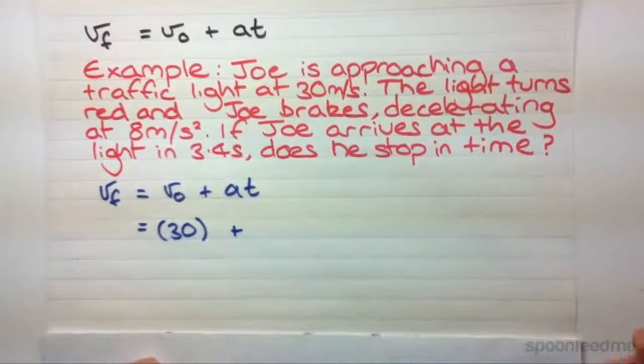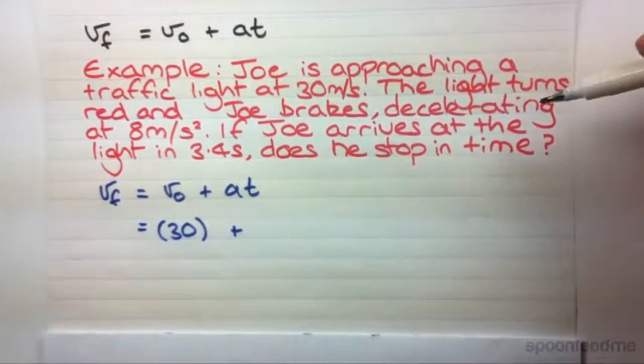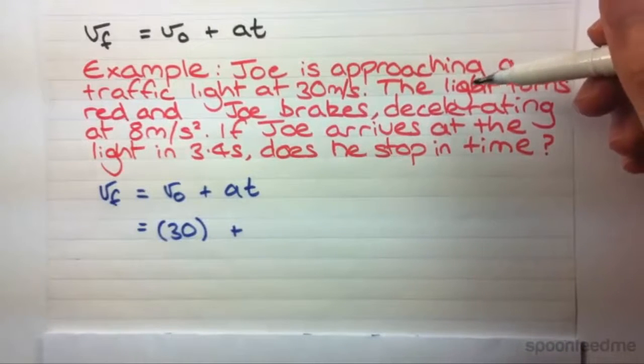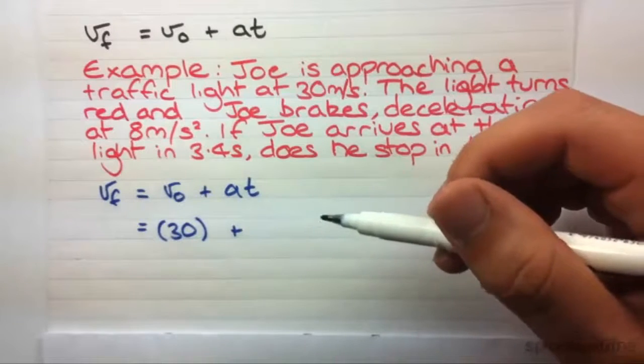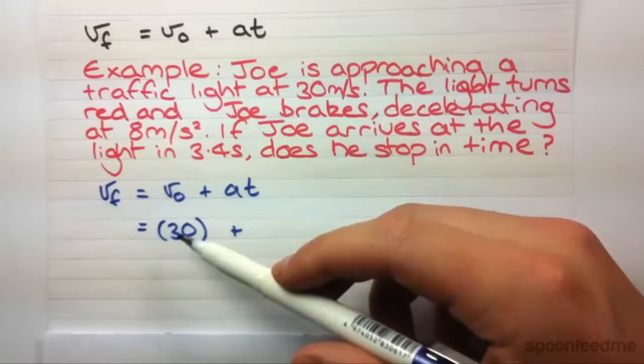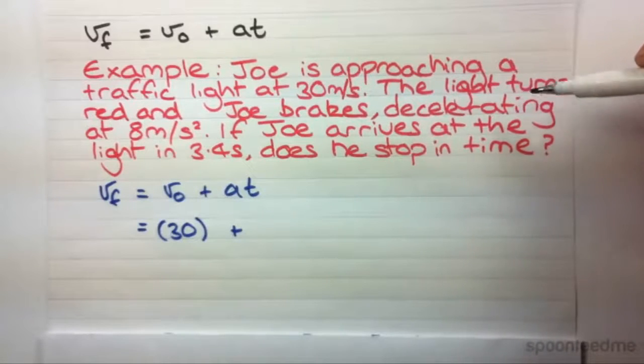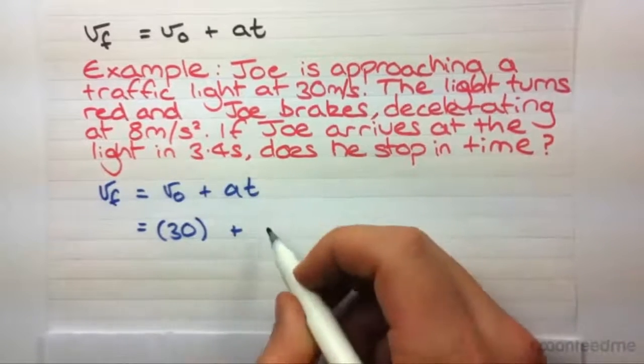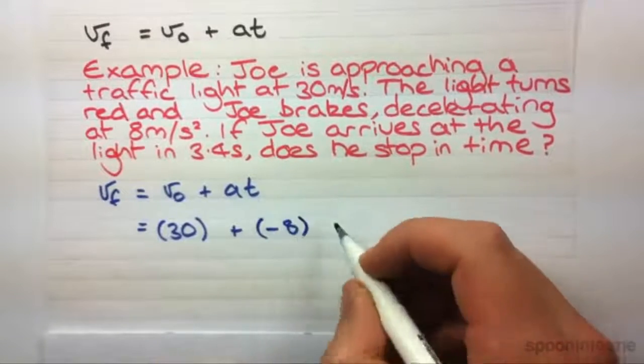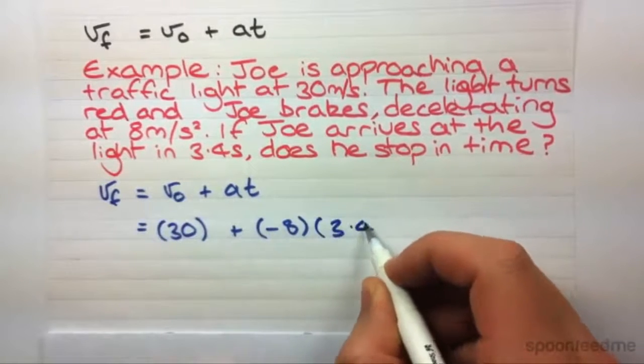Acceleration. Now, a really important concept is that when the acceleration is in an opposite direction to the velocity, we actually have to reflect that in our math. So, if the velocity we've defined going forward as positive, we've actually got to define deceleration going backwards as negative. So, rather than just being 8 metres per second, this is actually minus 8. And the time, 3.4 seconds.